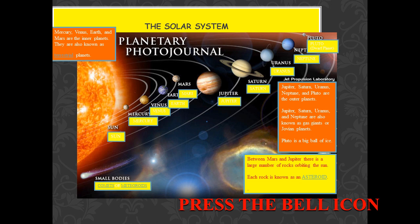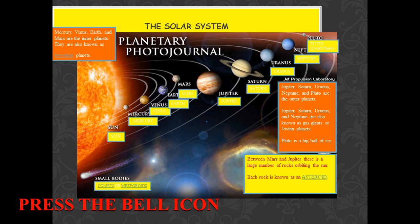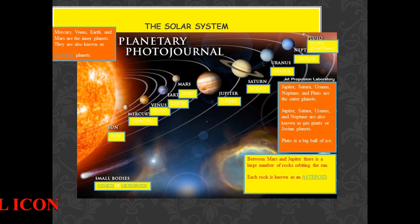We call this solar energy. Heat and light energy is very essential because without the sun, life on Earth is not possible. Plants use light energy from the sun for photosynthesis. Solar energy is also used in solar heaters, solar cars, solar watches, and satellites on the moon also use solar energy for their functioning.